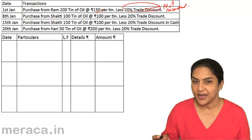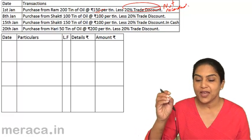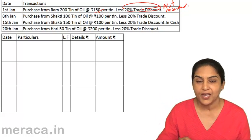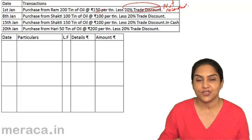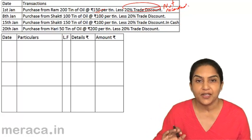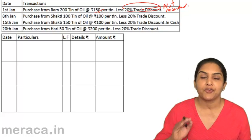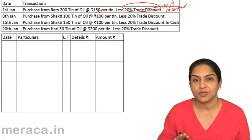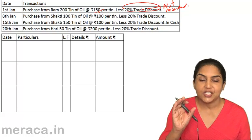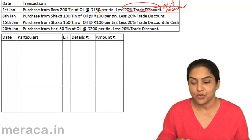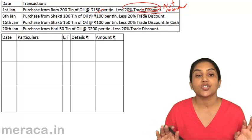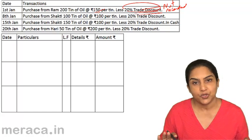A cash discount, on the other hand, is different. Once we buy this good for 120, it is possible that the supplier says if you make payment within a week, I will give you another 5% discount, but if you make this payment only after three months, then I cannot give you this discount. That cash discount is separately recorded in the books, but not trade discount. Trade discount does not find any place in the books of account.